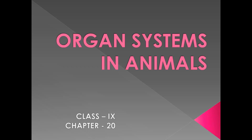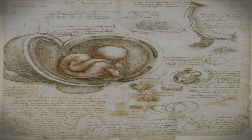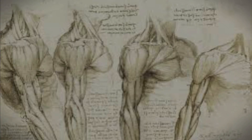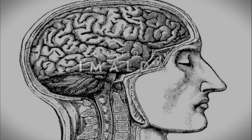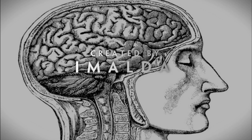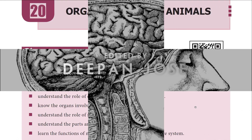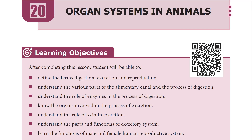Dear students, now we are going to learn a new chapter — Chapter number 20: Organ Systems in Animals. In this lesson, we are going to learn about the human digestive system, excretory system, and reproductive system.